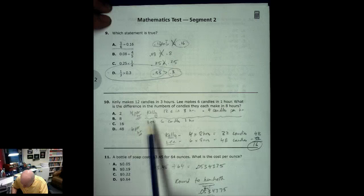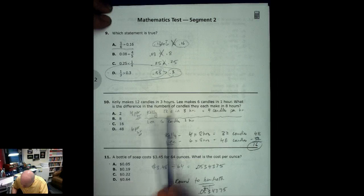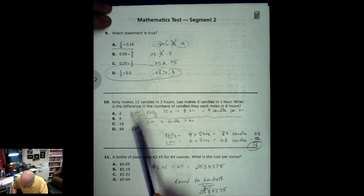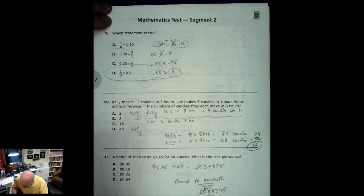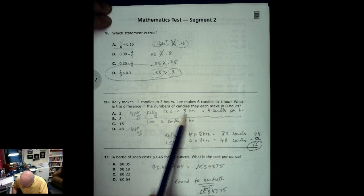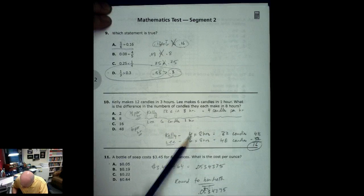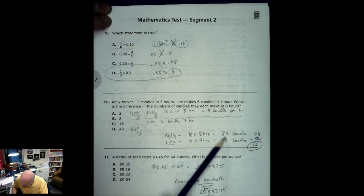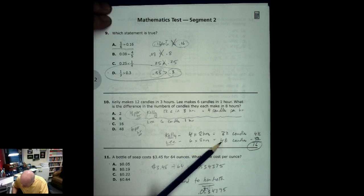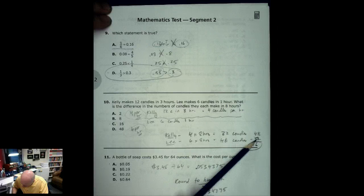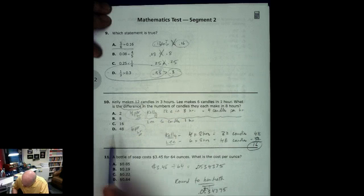This is kind of a unit rate problem. We've got Kelly up here who can do 12 candles in 3 hours. So if you figure out 12 divided by 3, she's making 4 per hour. And we know that Lee makes 6 per hour. They said that. So Kelly would do 12 candles in 3 hours. I showed you my 4 candles per hour. And Lee we already know. So Kelly, she's doing 4 candles times 8 hours. That's 32 candles. Lee does 6 candles times 8 hours. That's 48 candles. So if you subtract Lee from Kelly, 48 minus 32 you get a difference. And that's what we're looking for here. That difference is 16.